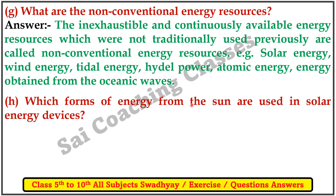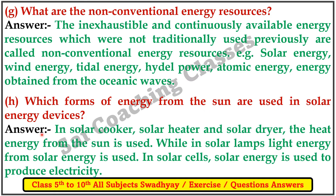Which form of energy from the sun is used in solar energy devices? Answer: in a solar cooker, solar heater, and solar dryer, the heat energy from the sun is used. While in solar lamps, light energy from solar energy is used. In solar cells, solar energy is used to produce electricity.